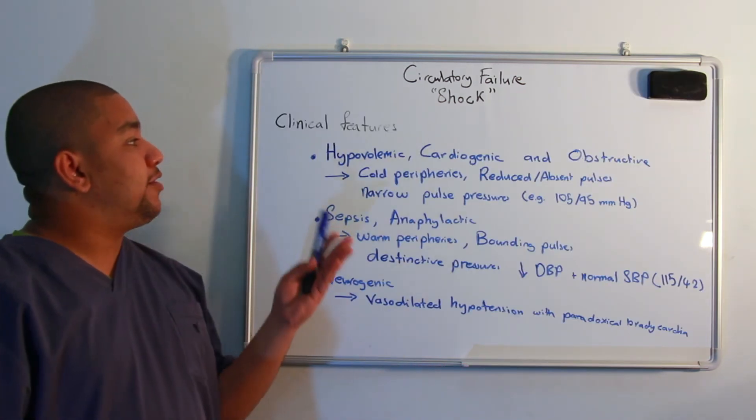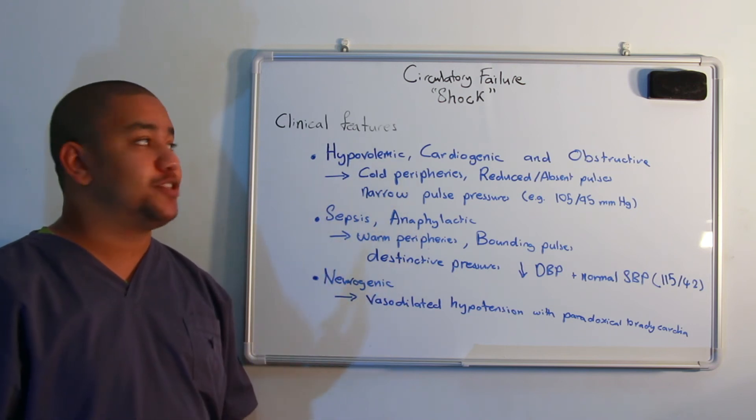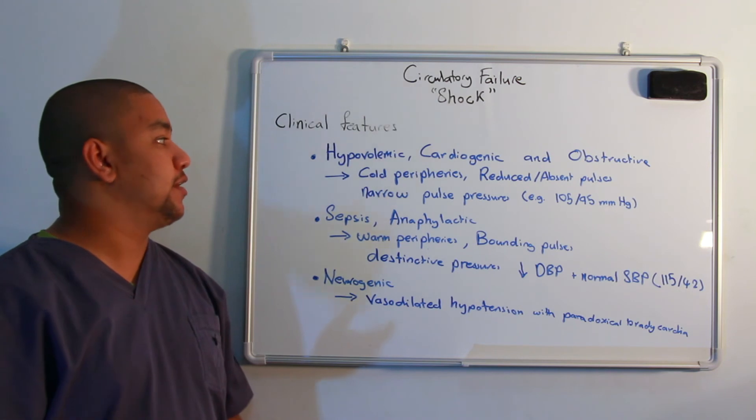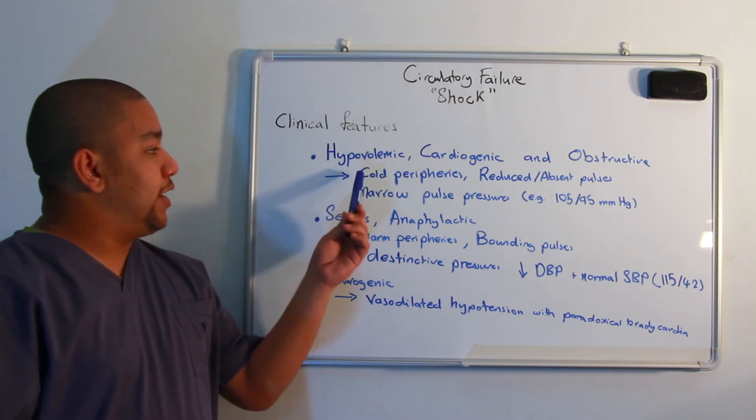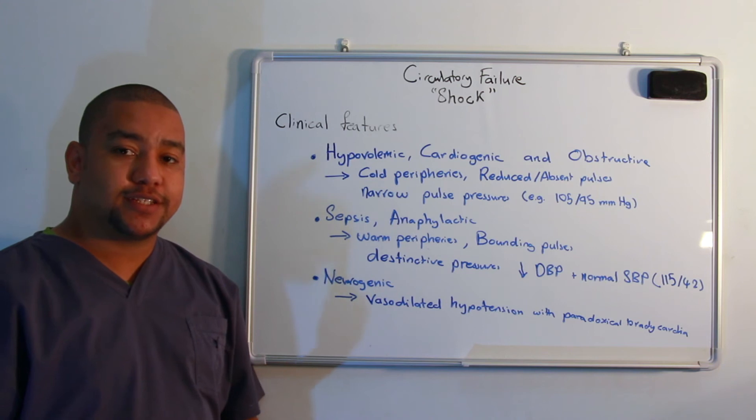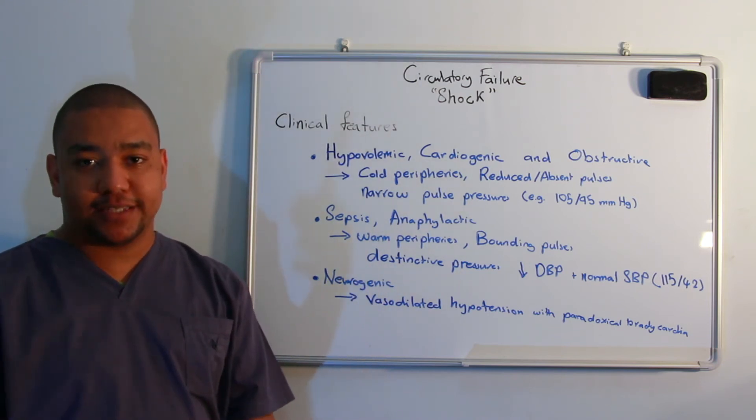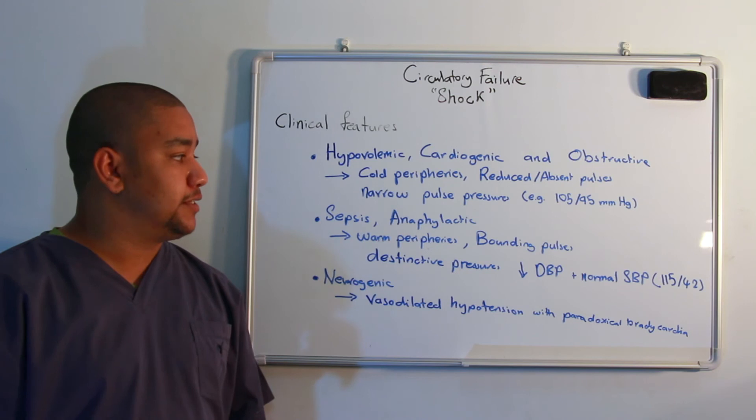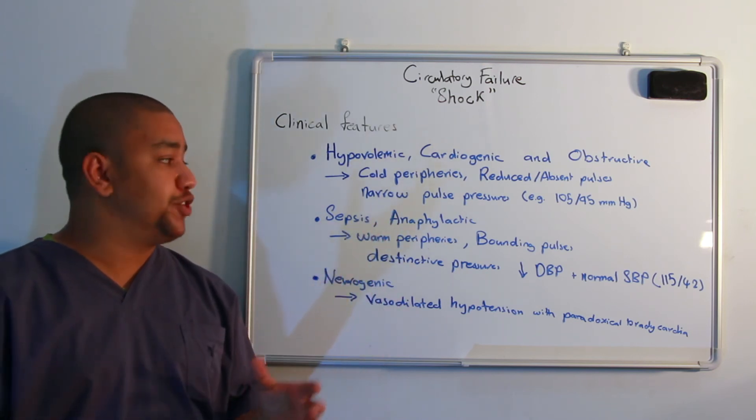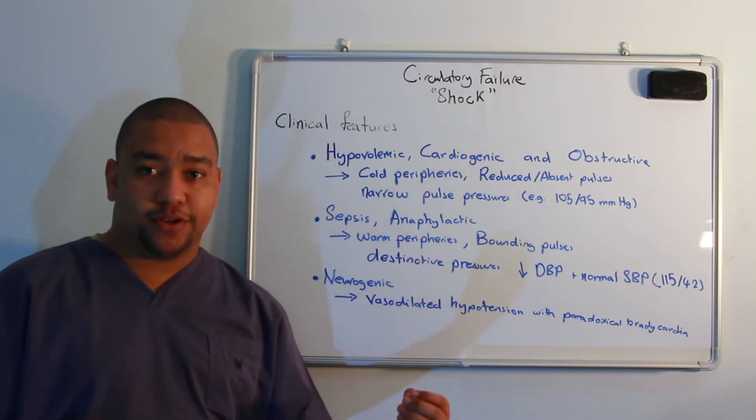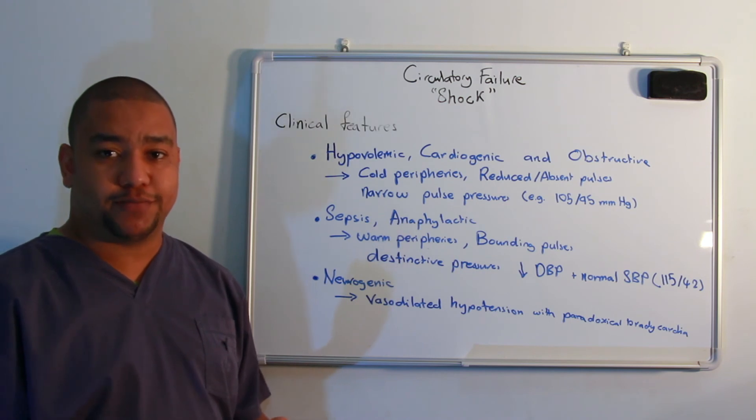Recognizing the clinical features of circulatory failure is really important, as early institution of treatment correlates with a better prognosis. In hypovolemic, cardiogenic, and obstructive shock, you would have the classical cold peripheries with reduced or absent peripheral pulses and a weak central pulse. In early hemorrhagic shock, you would have a narrow pulse pressure, with a low systolic blood pressure and a high diastolic blood pressure.